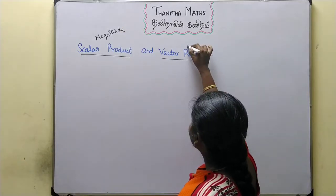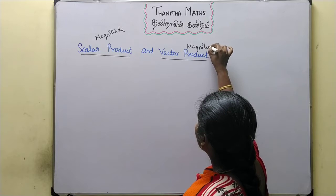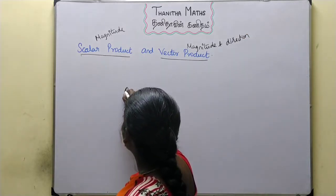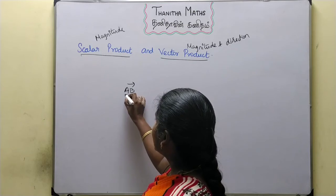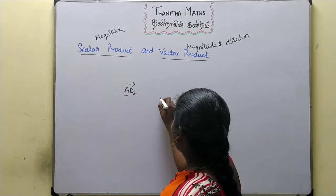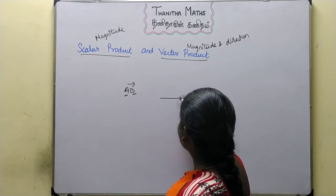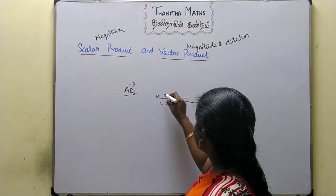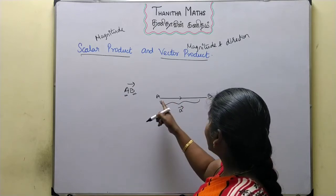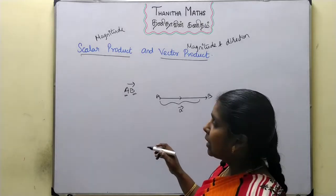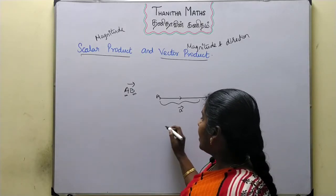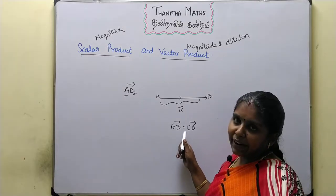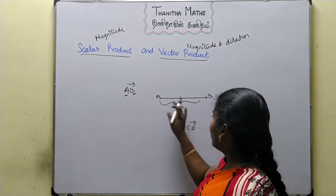A vector has both magnitude and direction. How do we represent a vector AB? A is the initial point and B is the terminal point — a directed line segment. If we have to represent direction and length, we say A vector equals B vector when both direction and magnitude are equal. Magnitude is nothing but the length of the vector.